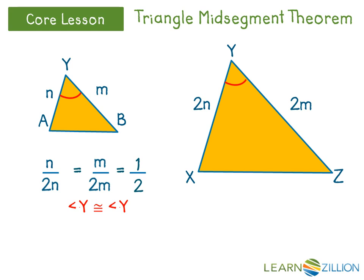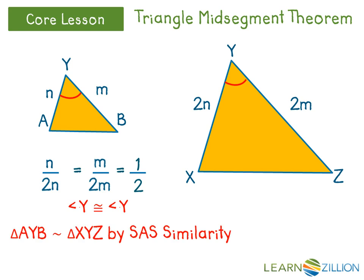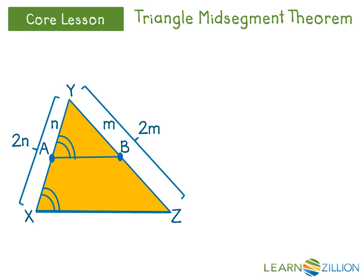Since angle Y is between the proportional sides that we have just checked, it is the included angle. Therefore, we have that two sides from each triangle are proportional, and that their included angles are congruent. This is enough to prove that triangle AYB is similar to triangle XYZ by side-angle-side similarity. Since the triangles are similar, their corresponding angles are congruent. This means that angle A is congruent to angle X. When we put the triangles back together, we see that angle A is not only congruent to angle X, but that they form a pair of corresponding angles. When corresponding angles are congruent, the lines cut by the transversal are parallel with each other. In other words, segment AB is parallel to segment XZ.